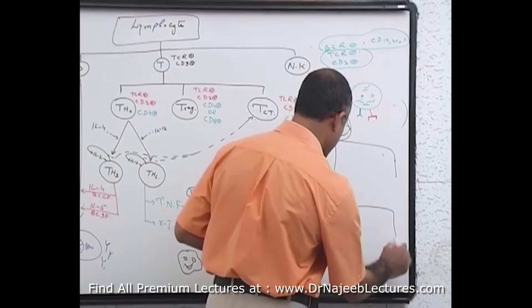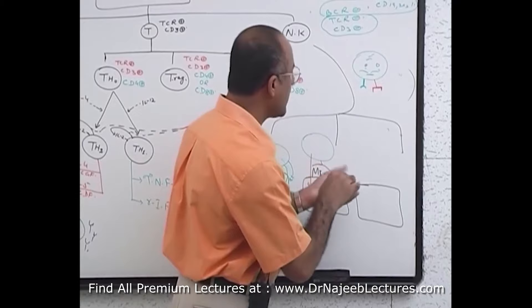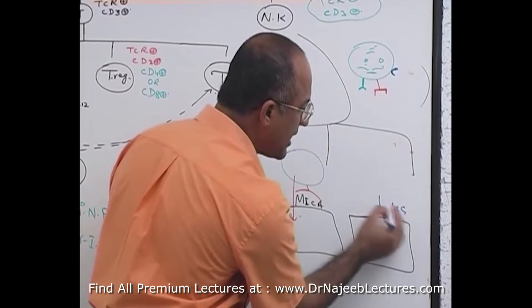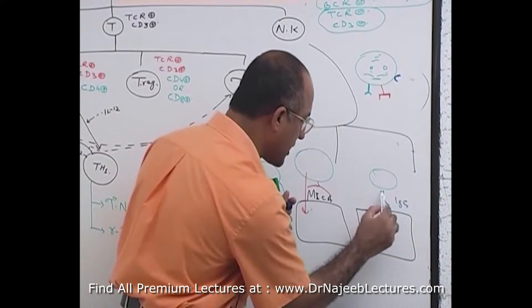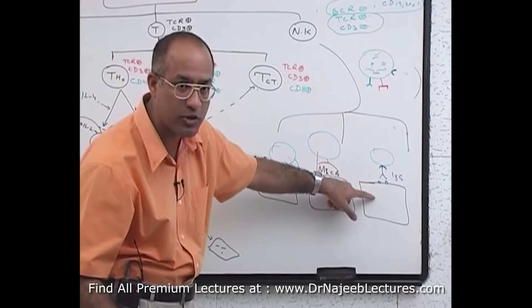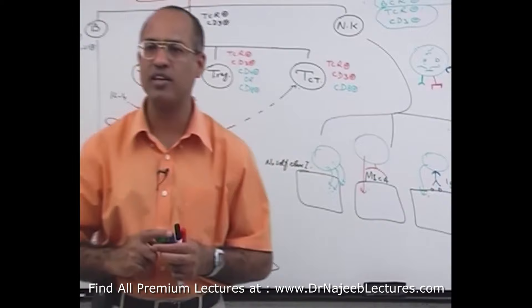Mechanism three: natural killer cells have a receptor for IgG antibody. If a cell has IgG fixed on it, the natural killer cell engages this receptor and assumes the cell carries an antigen targeted by that antibody. The natural killer cell then kills that cell. This process is called antibody-dependent cell-mediated cytotoxicity.